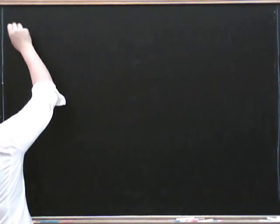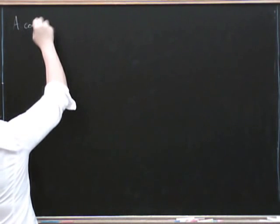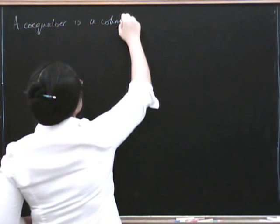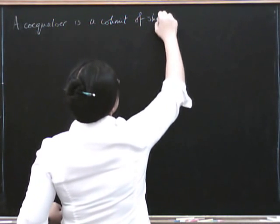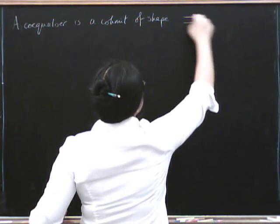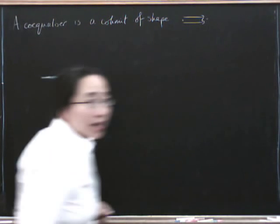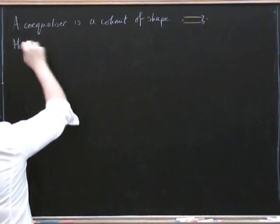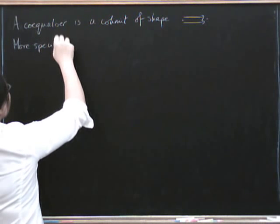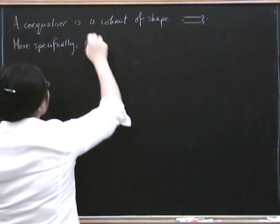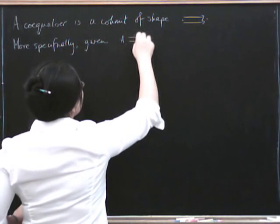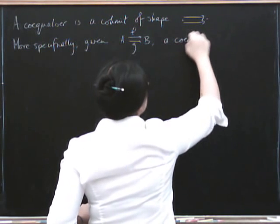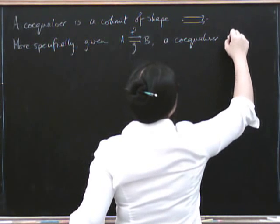So let's have a look and see what a co-equalizer is. A co-equalizer is a co-limit of shape the following thing: a pair of parallel arrows. Let's think about what that actually gives us, more specifically. Given a pair F and G, a co-equalizer is...